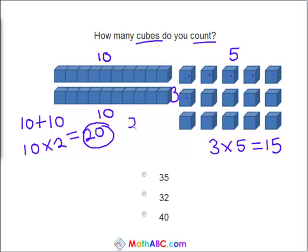So now let's just add 20 plus 15. 20 plus 15 equals 35. So we know that this is the right answer.